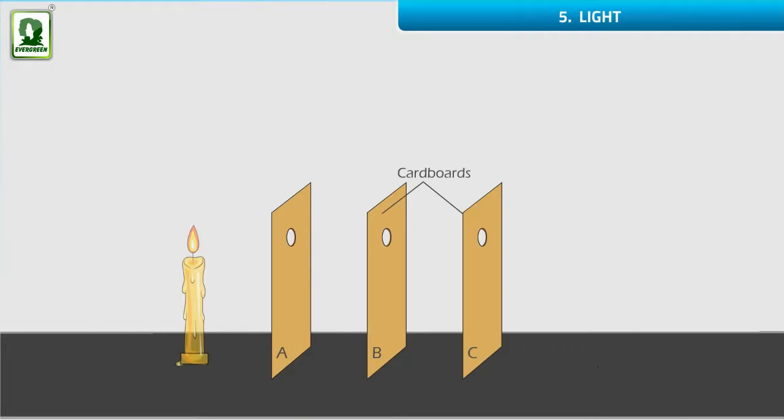Place a lighted candle in front of cardboard A. When we look through the hole in cardboard C, we find that the candle flame is visible as long as the holes in the three cardboards are in a straight line.